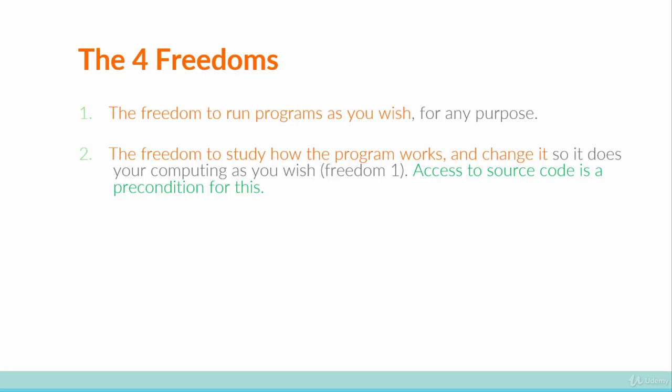Access to the source code for a program is a precondition for freedom two — you can't study how a program works unless you can look at its code. So having access to the source code is a precondition for freedom number two. The third freedom is the freedom to redistribute copies of the software so that you can, as they say, help your neighbor.